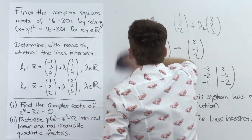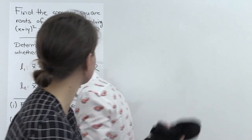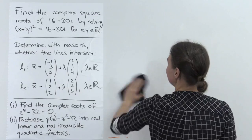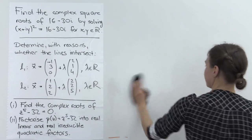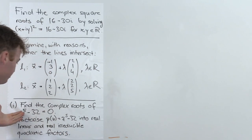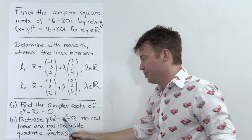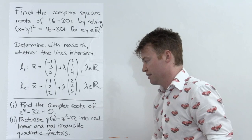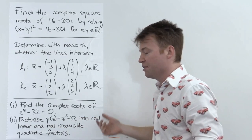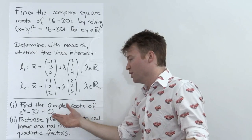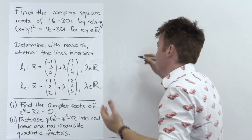Next question involves complex roots — finding the nth roots of a complex number. There's a standard procedure. A typical part (b) asks you to factorize into real linear and real irreducible quadratic factors. You need the complex linear factors as an intermediate step to obtain the real quadratic factors.